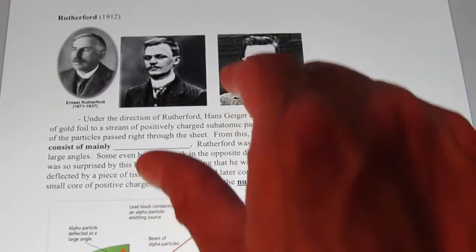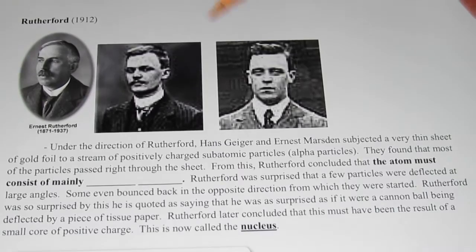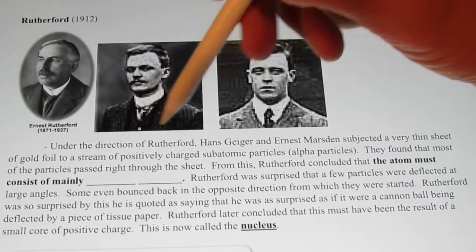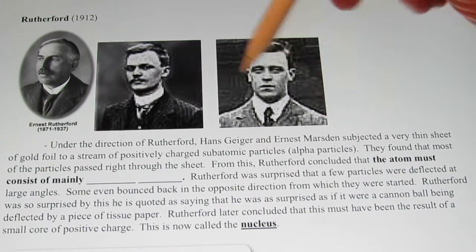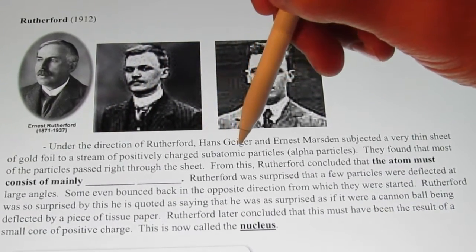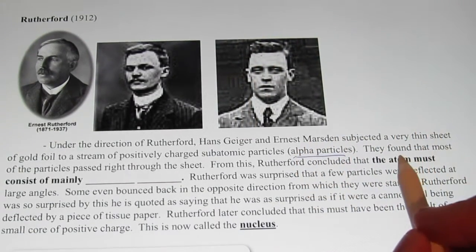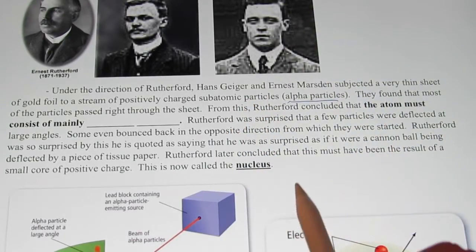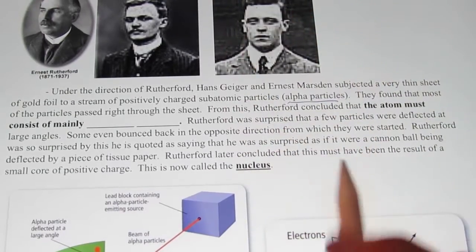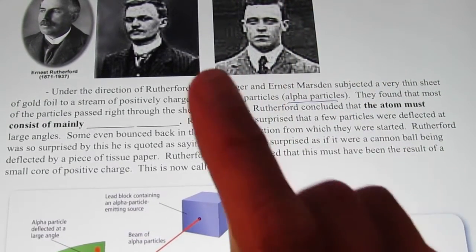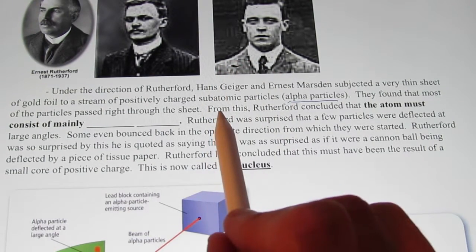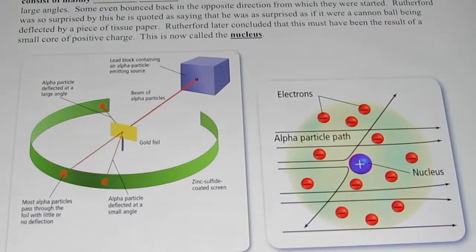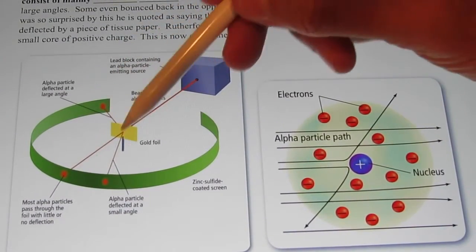Moving along — Ernest Rutherford represents the next big leap in our knowledge of the atom. Under his direction, Hans Geiger and Ernest Marsden subjected a very thin sheet of gold foil to a stream of positively charged alpha particles. They found that most particles passed right through the foil, just as Rutherford had expected, since they are high-energy particles. However, something happened that Rutherford did not expect. Let me show you a drawing of the gold foil experiment to explain what happened.